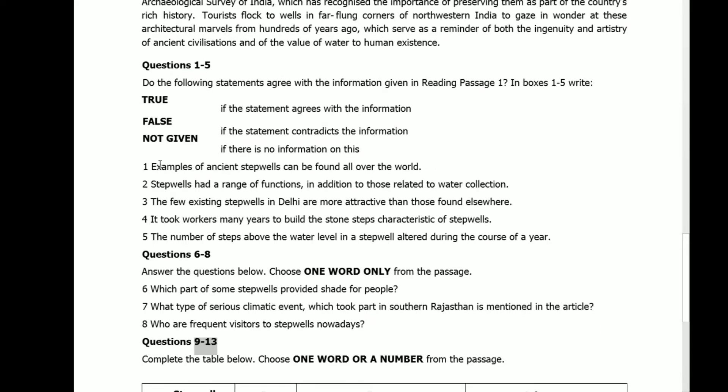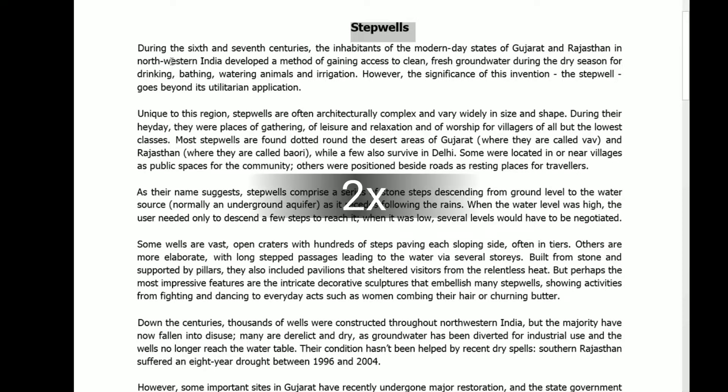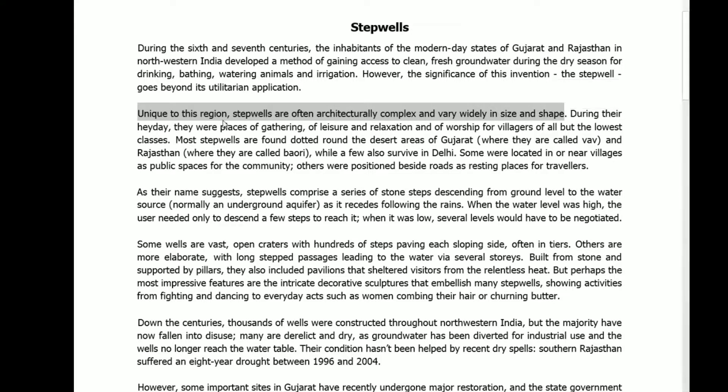First, true/false/not given. Statement one: examples of ancient stepwells can be found all over the world. Using the keyword method, my keywords are 'examples of ancient stepwells all over the world.' Reading the passage: stepwells are unique to this region, often architecturally complex and vary widely in size and shape. The answer is false — this statement contradicts the information because stepwells are unique to the region.